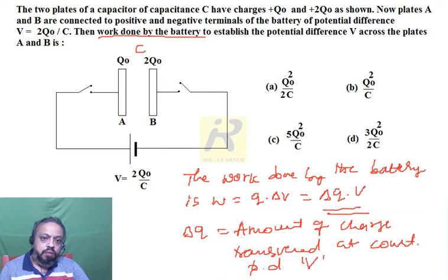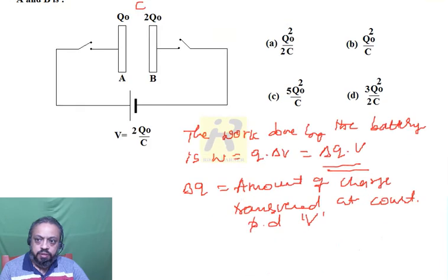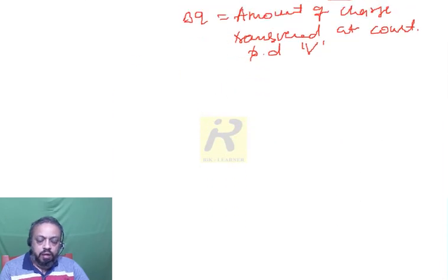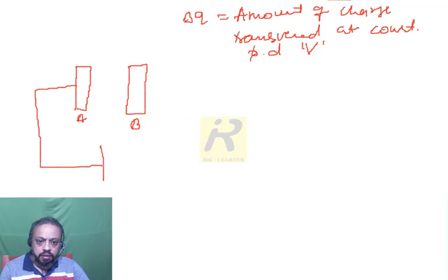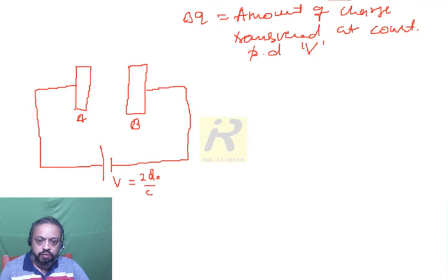When the two keys are pressed, the battery is connected to the two plates of the capacitor. Plate A and plate B are connected to the battery. The potential difference of the battery is 2Q₀ divided by C, and the capacitance of the capacitor is C.